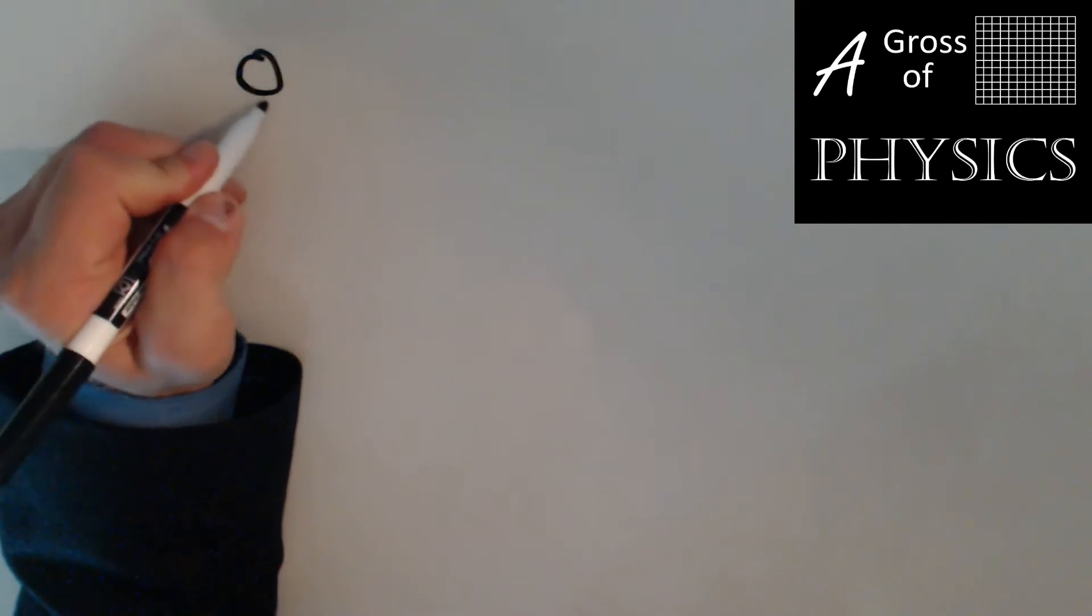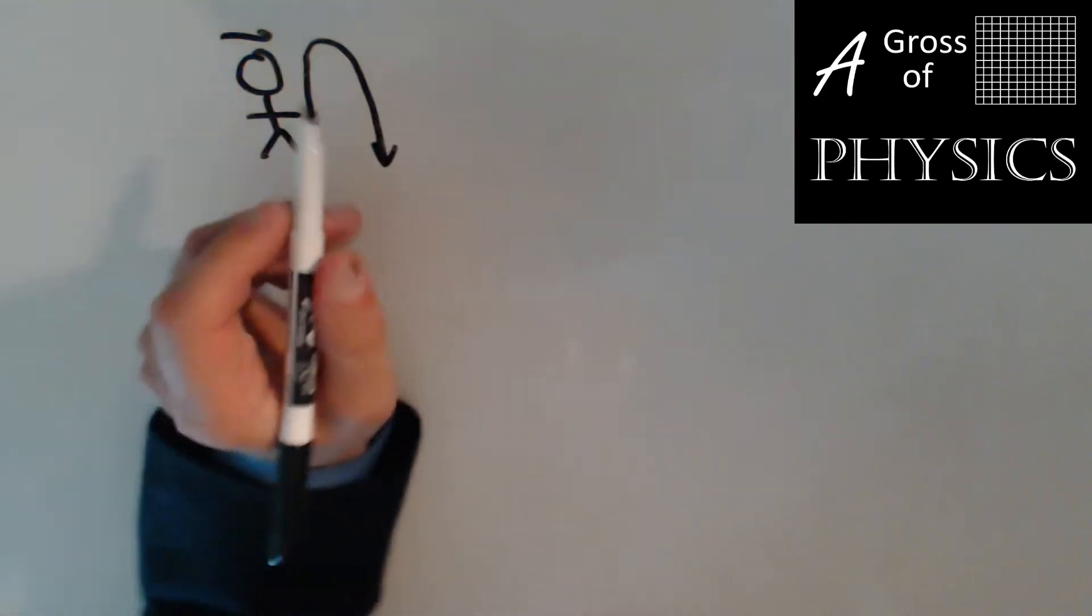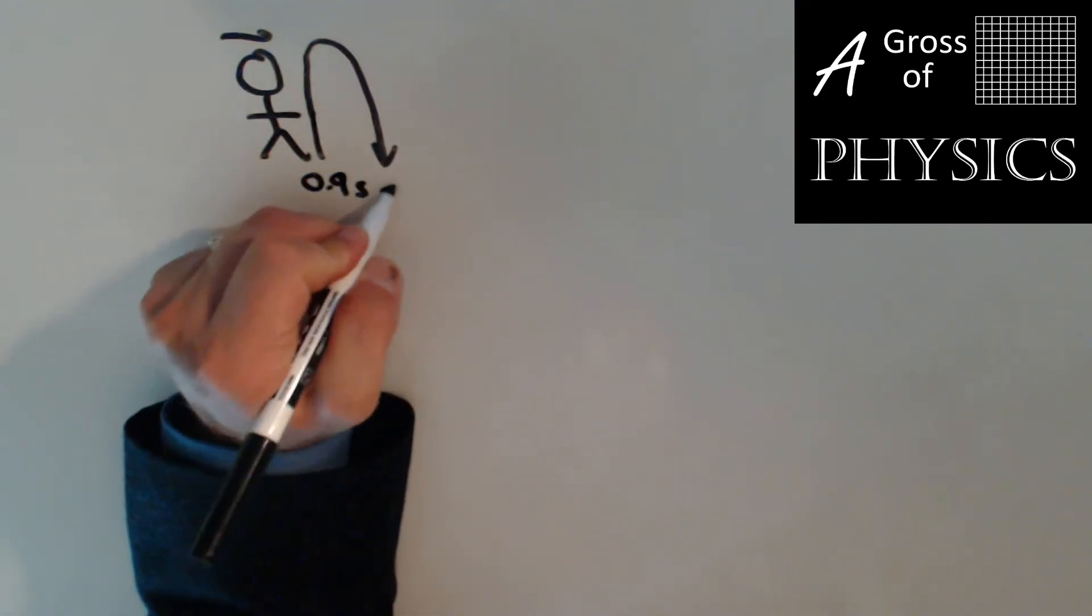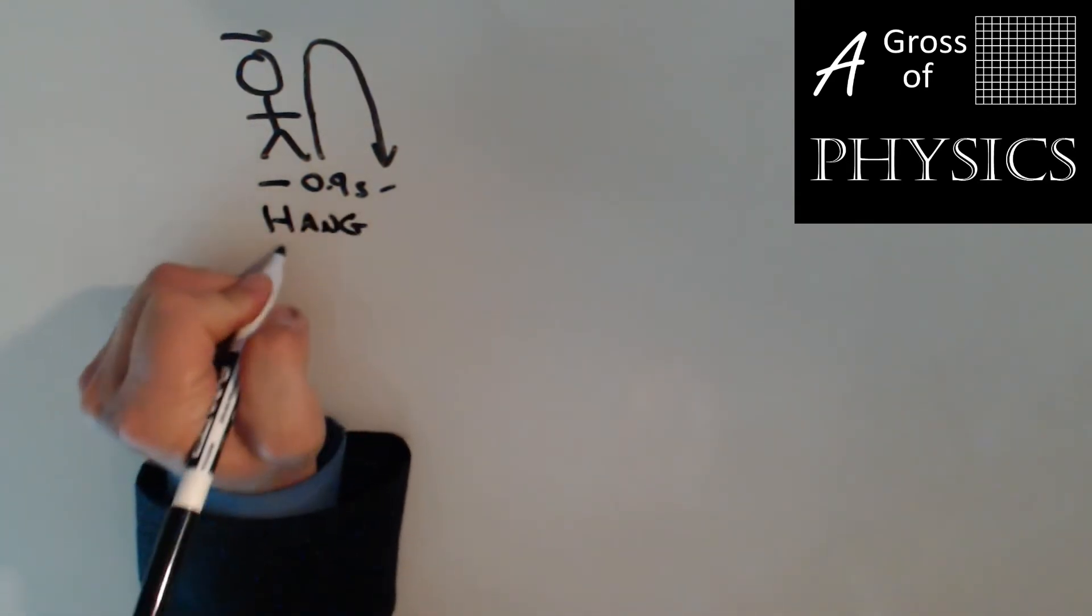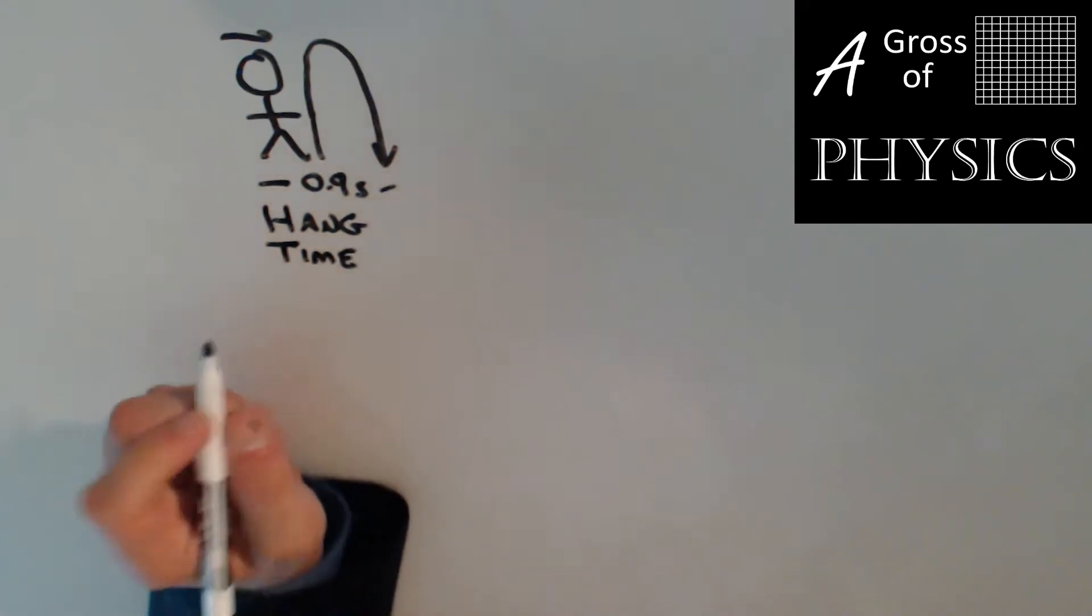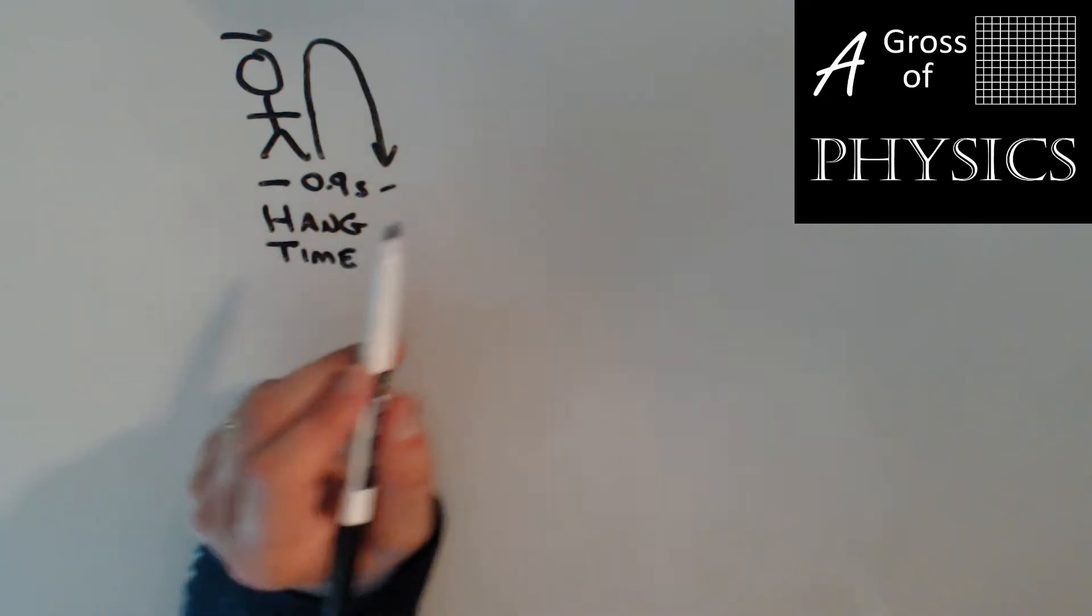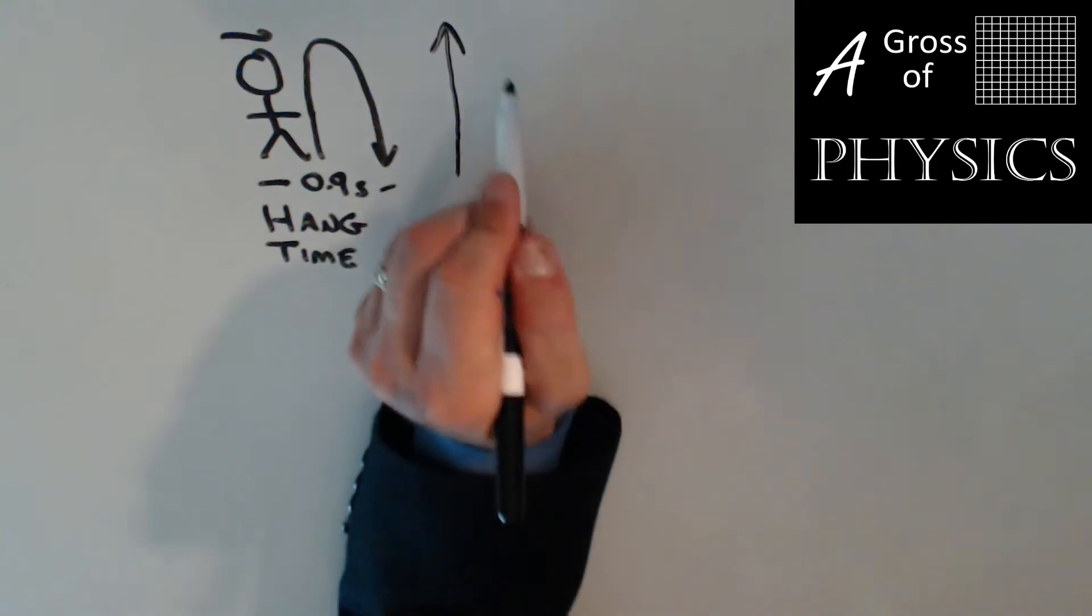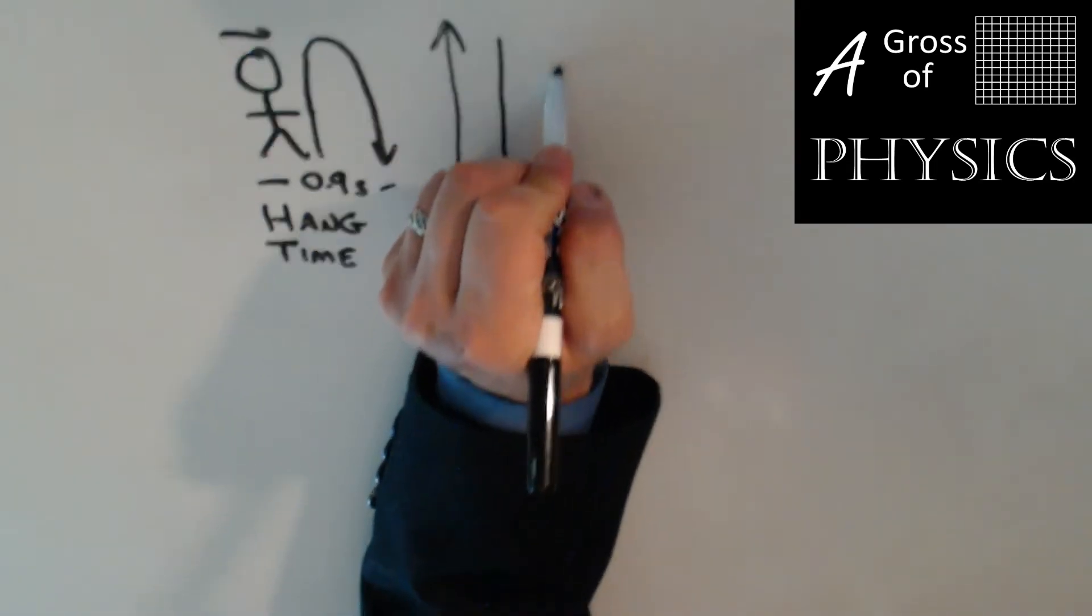Alright, for this next problem, we're going to solve for a person who's jumping into the air and then lands 0.9 seconds later. So they have a hang time of 0.9. Now every time we deal with a hang time problem, we have a couple of options. Option one, just worry about the upward part. Option two, worry about the downward part. And option three, the entire trip.